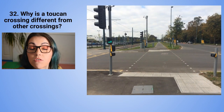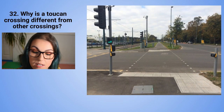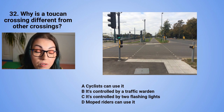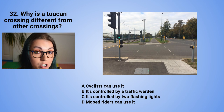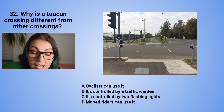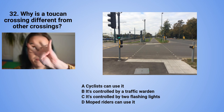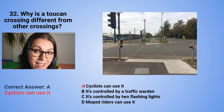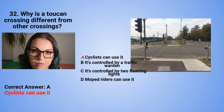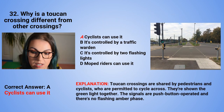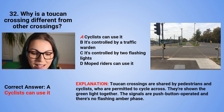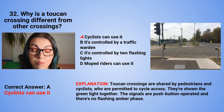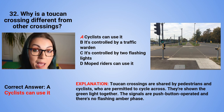Question 32: Why is a Toucan crossing different from other crossings? A. Cyclists can use it. B. It's controlled by a traffic warden. C. It's controlled by two flashing lights. Or D. Moped riders can use it. The correct answer is A — cyclists can use it. Toucan crossings are shared by pedestrians and cyclists, who are permitted to cycle across. They are shown the green light together. The signals are push-button operated and there is no flashing amber phase.